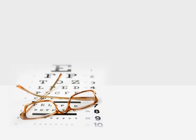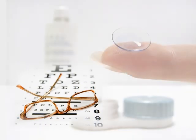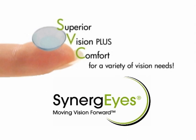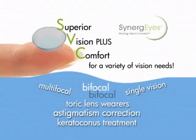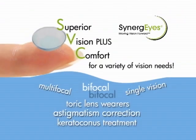Astigmatism is very common — as common as nearsightedness or farsightedness. It can occur all by itself, or it can occur in combination with nearsightedness and farsightedness as well. We can use either glasses or contact lenses in the soft or rigid form, or a newer combination lens called a synergized lens, which has both a hard middle and a soft skirt, to correct for these two points of focus.